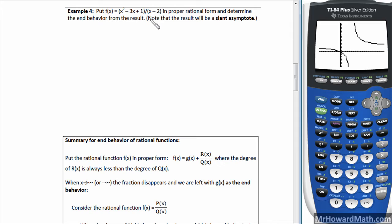So we have a degree 2 on top, degree 1 on bottom, so it's not in proper rational form. So we do long division for that, so that would be, we're taking x minus 2 and we have x squared minus 3x plus 1. So we do long division on that.